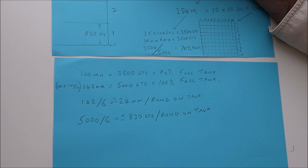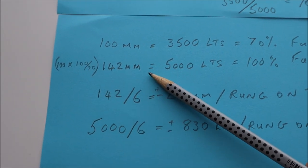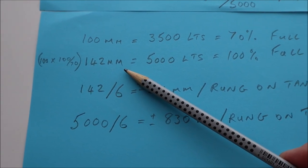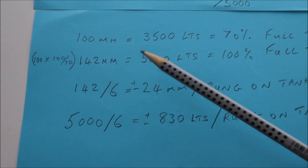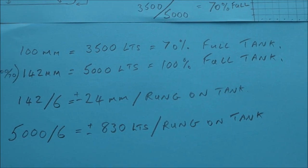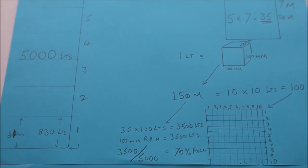So it turns out therefore that the 142 millimeter capacity of the tank that we calculated practically up at the tank there is more or less the same as our theoretical calculation, which is great. I didn't expect it to be that close, but obviously the empirical method that we used to measure the level of the tank there was pretty accurate.